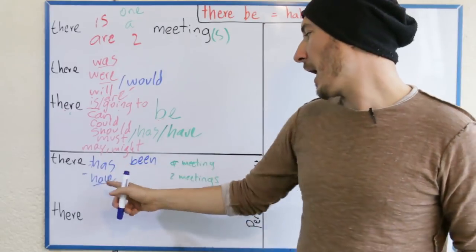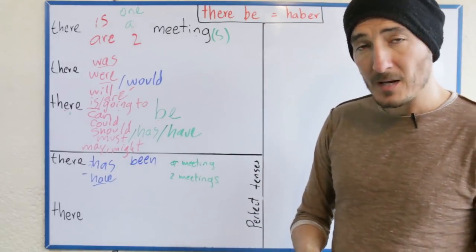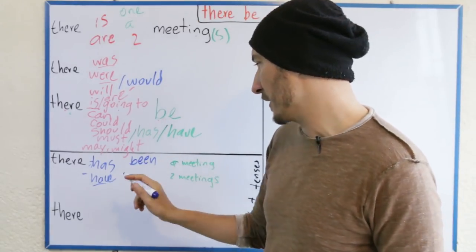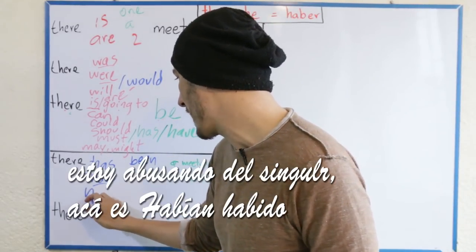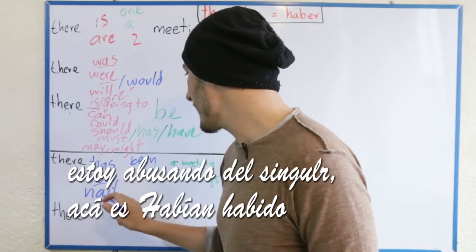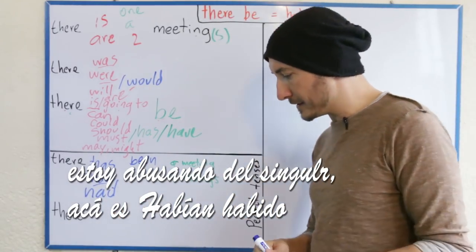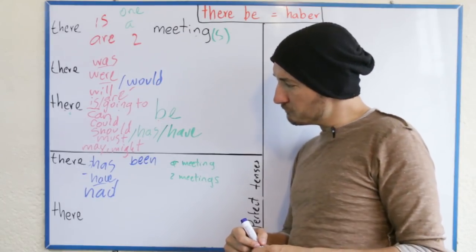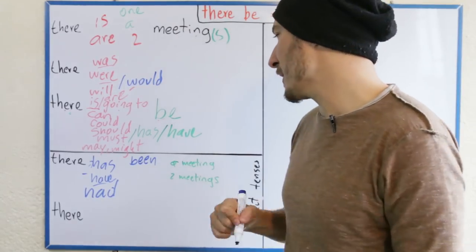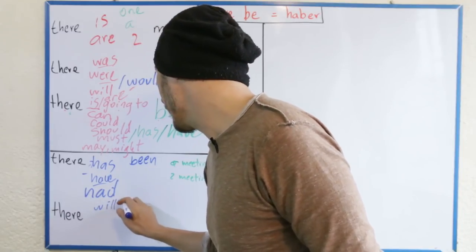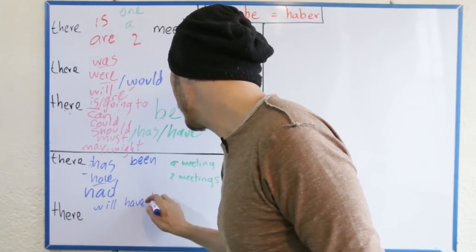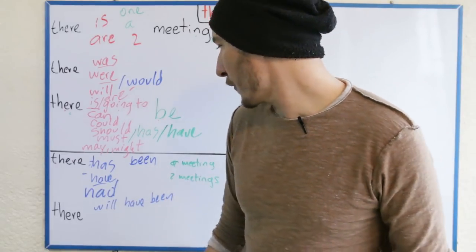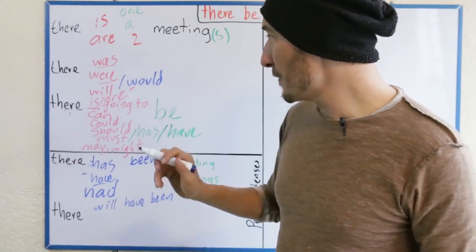Había habido dos reuniones — pues recuerden que en el pasado, si no cambiaba de acuerdo a la persona, era el mismo para todos: 'had'. Había habido dos reuniones cuando programaron la tercera. En futuro, habrá habido una reunión — there will have been a meeting. Habrá habido dos reuniones — there will have been two meetings. Y lo mismo con el resto.